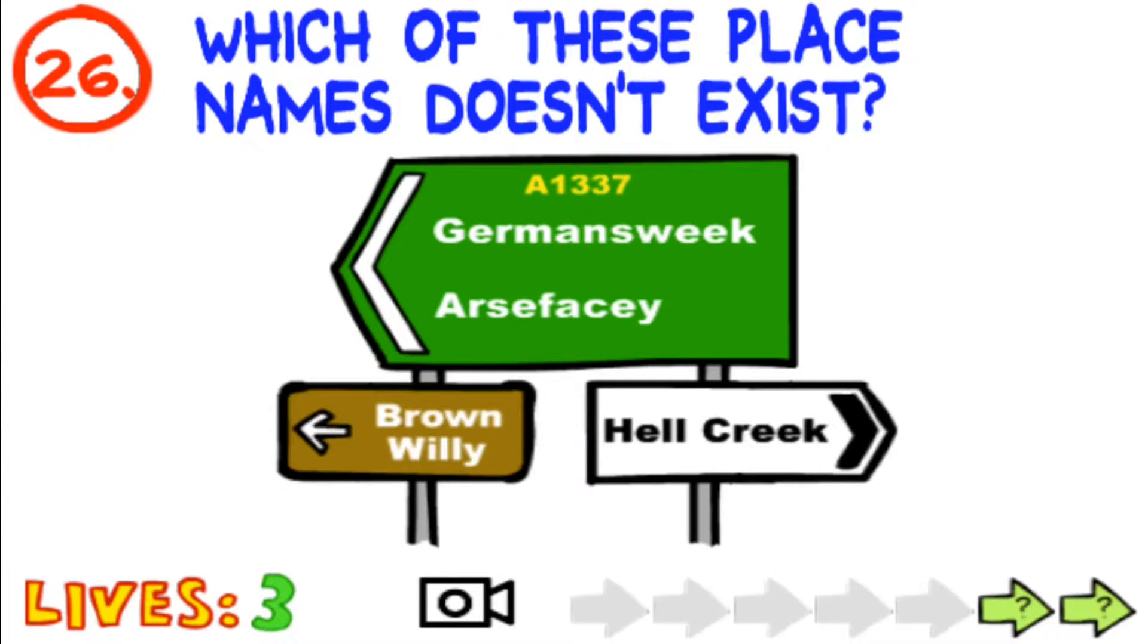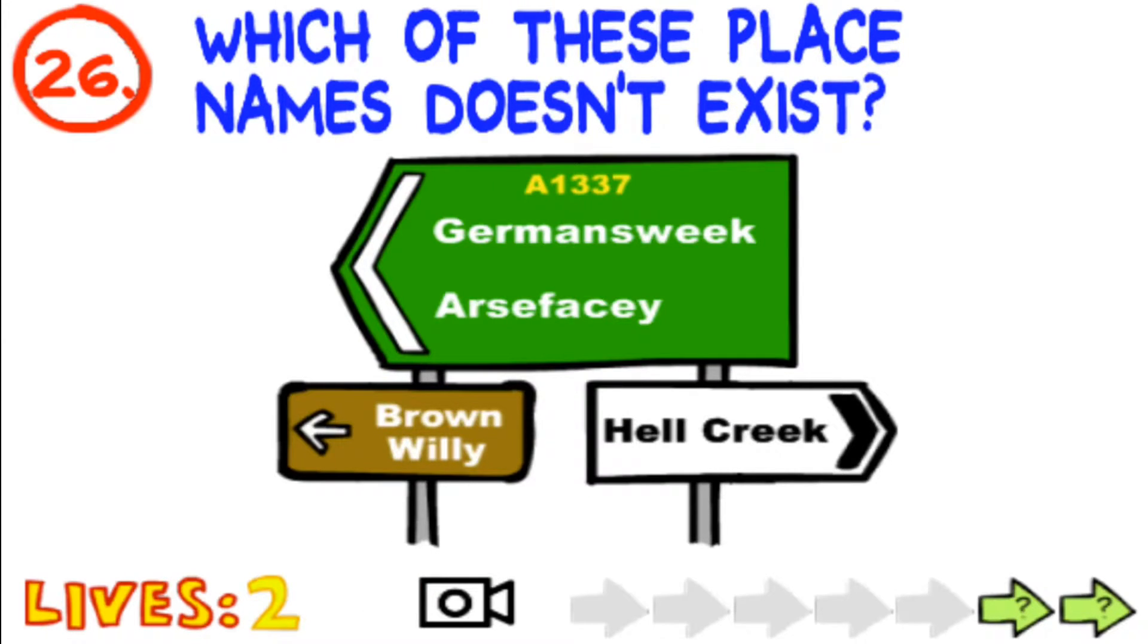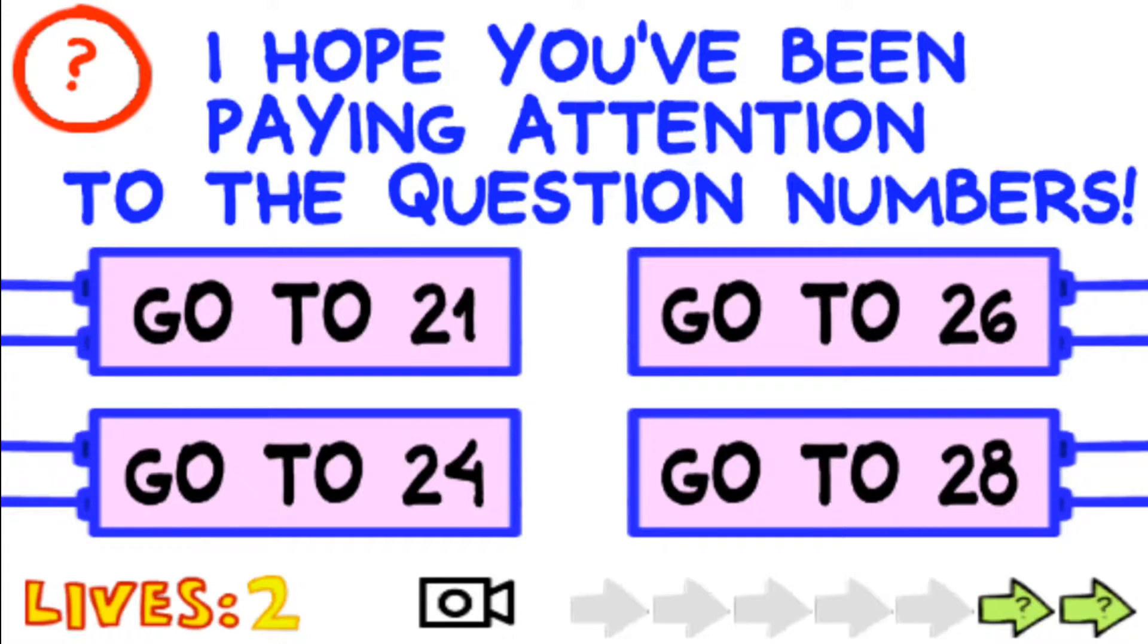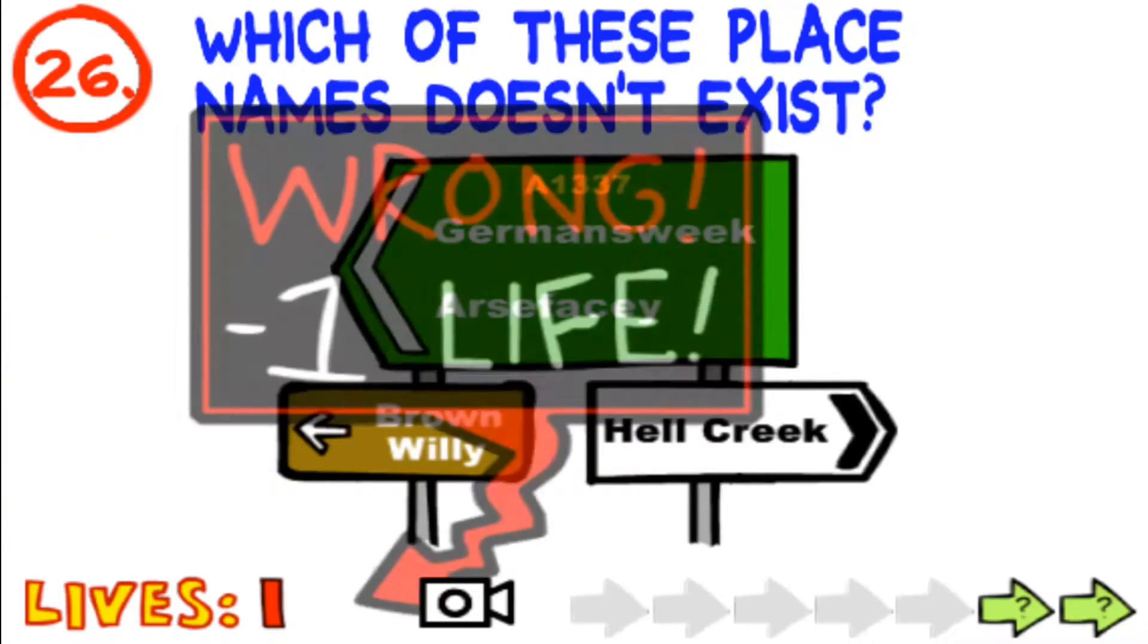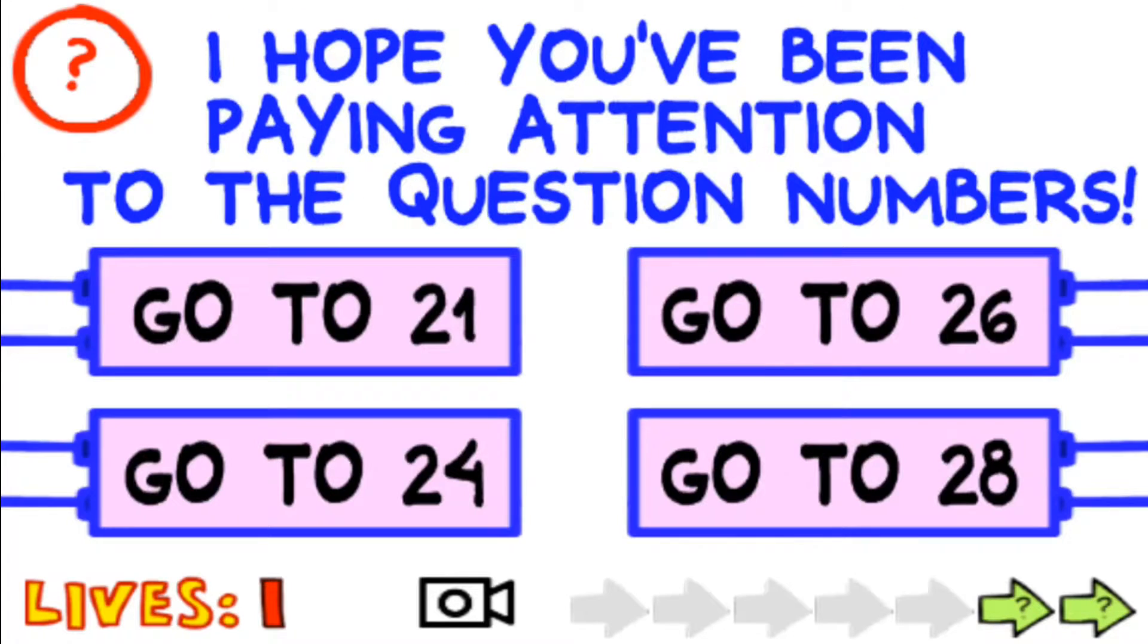Which one of these names doesn't exist? Brown Willy. Nope. This one. Oh, I hope you've been paying attention to the number questions. Oh, I think it was 26. Nope. Wait, 26? Which means this one is 27, so go to 28.